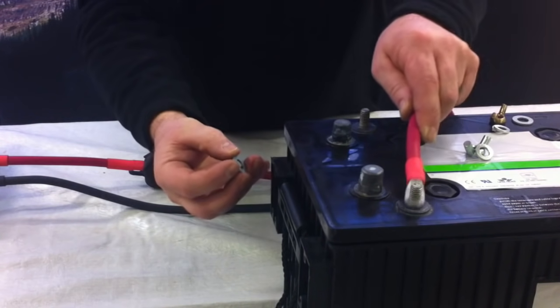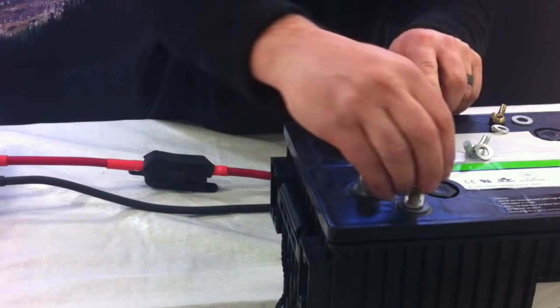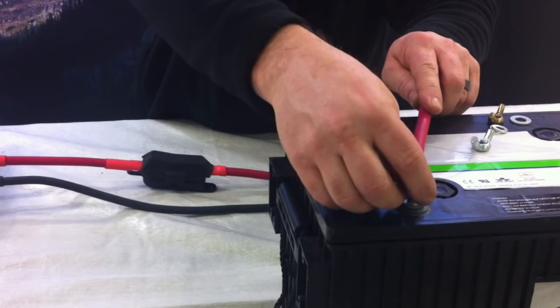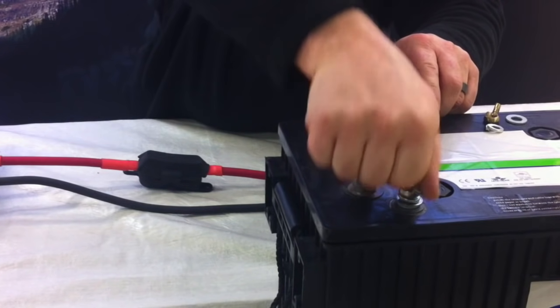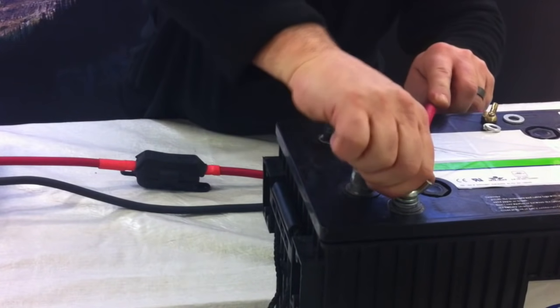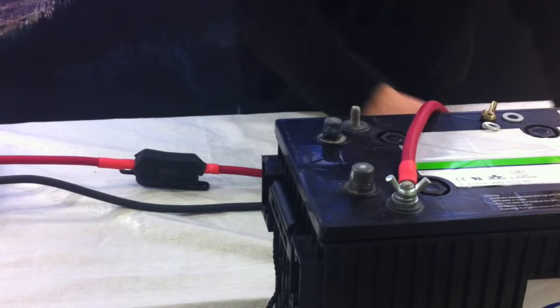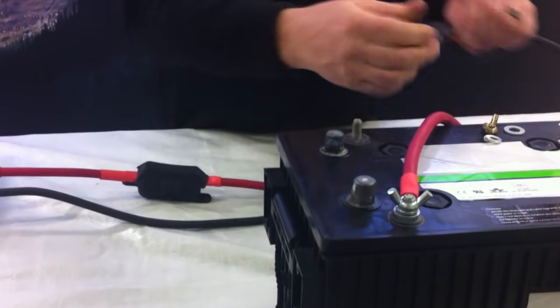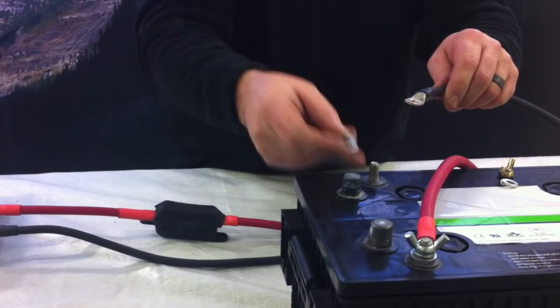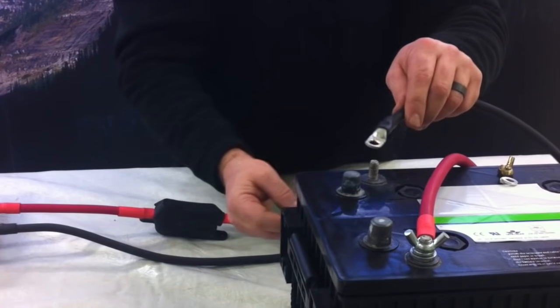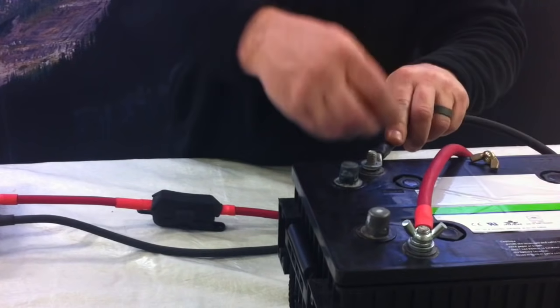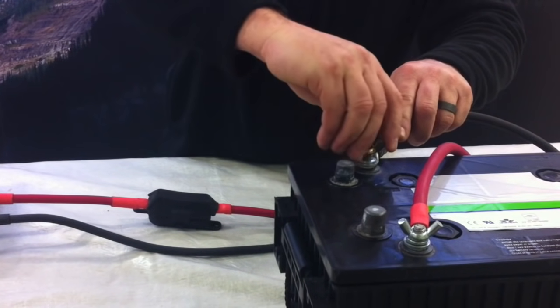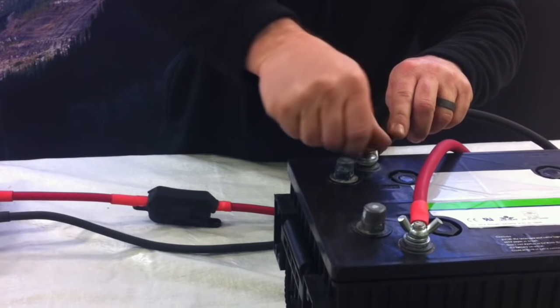So lug down first, flat washer on top, lock washer, and then we can move on to the negative. Again making sure that nothing comes in between the battery terminal and the lug. The lug going down first, the flat washer, the lock washer, and then the wing nut.